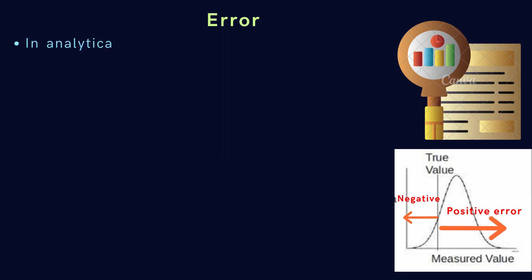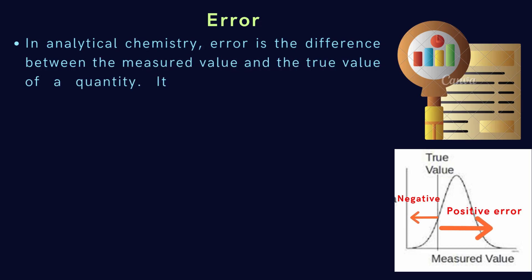Welcome to this interesting and highly useful topic, Error in Chemical Analysis. In analytical chemistry, error refers to the difference between the measured value and the true value of a quantity. It tells us how much our observed result deviates from the actual one.